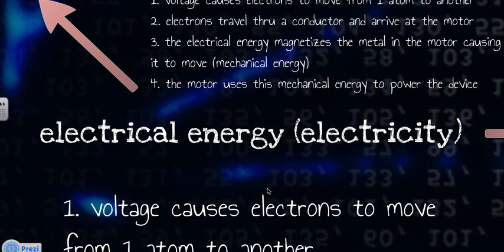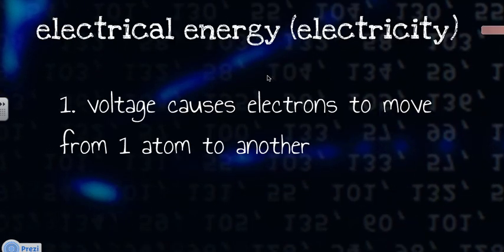So we'll start with electrical energy. Electrical energy, electricity, starts when voltage causes electrons to move from one atom to another. So you have a battery or a generator or something. Whatever the voltage source is, it's causing the electrons to move.